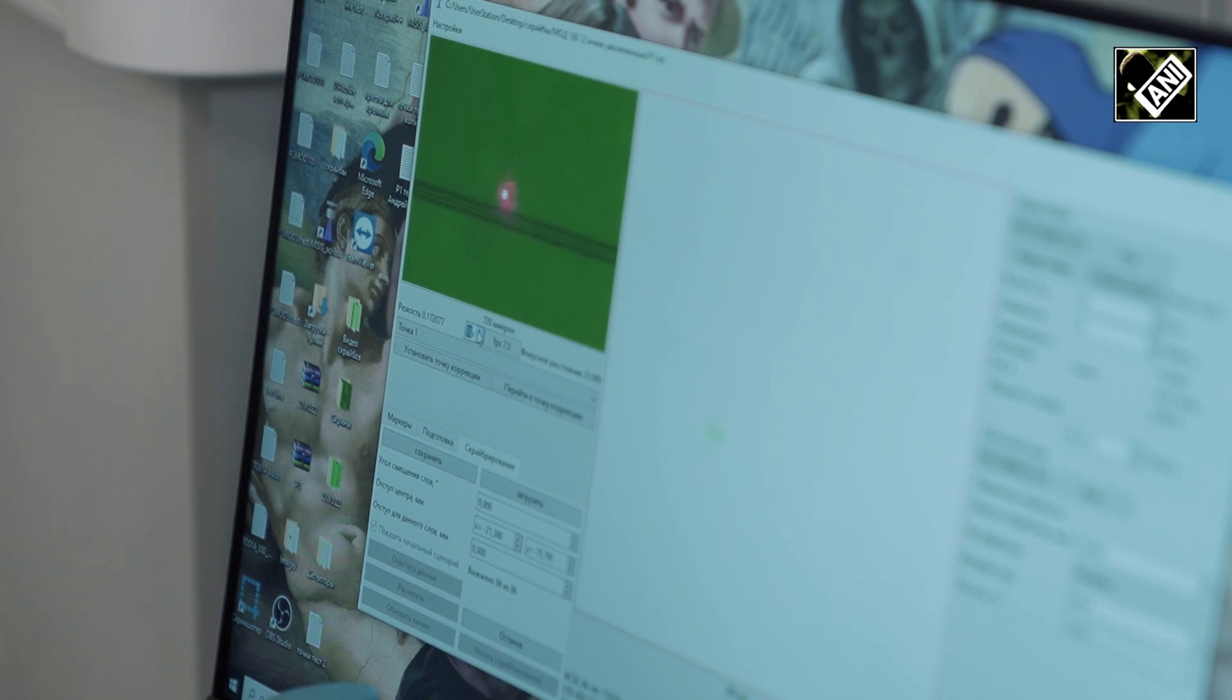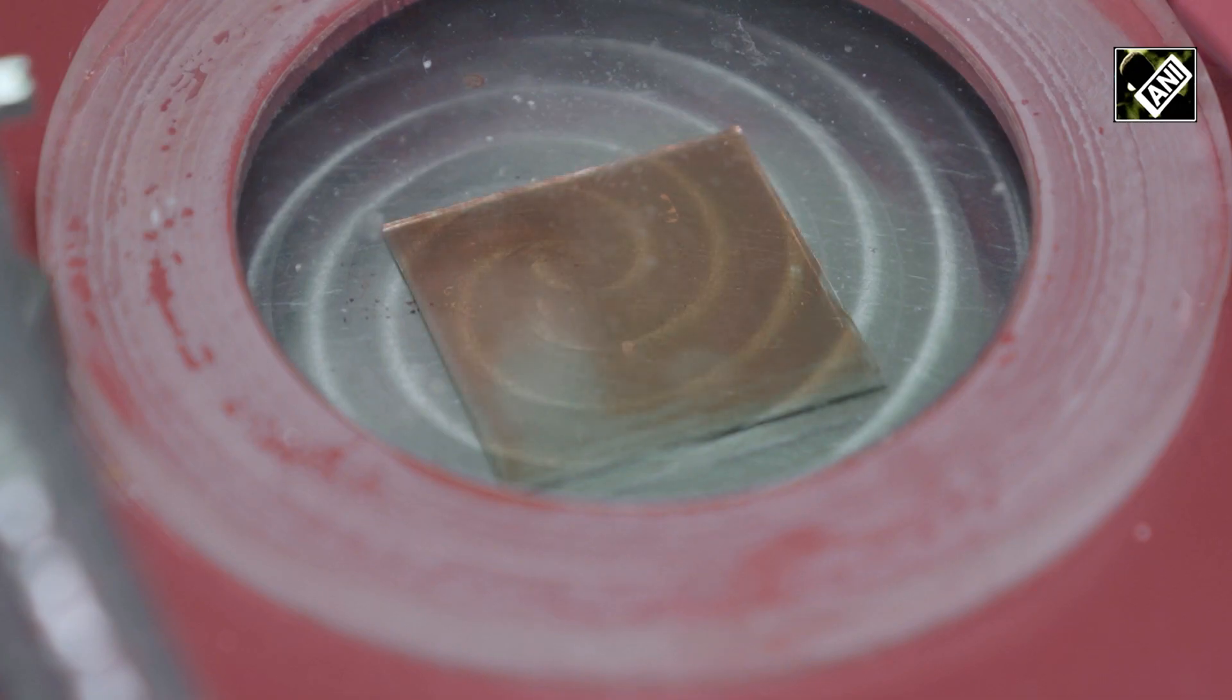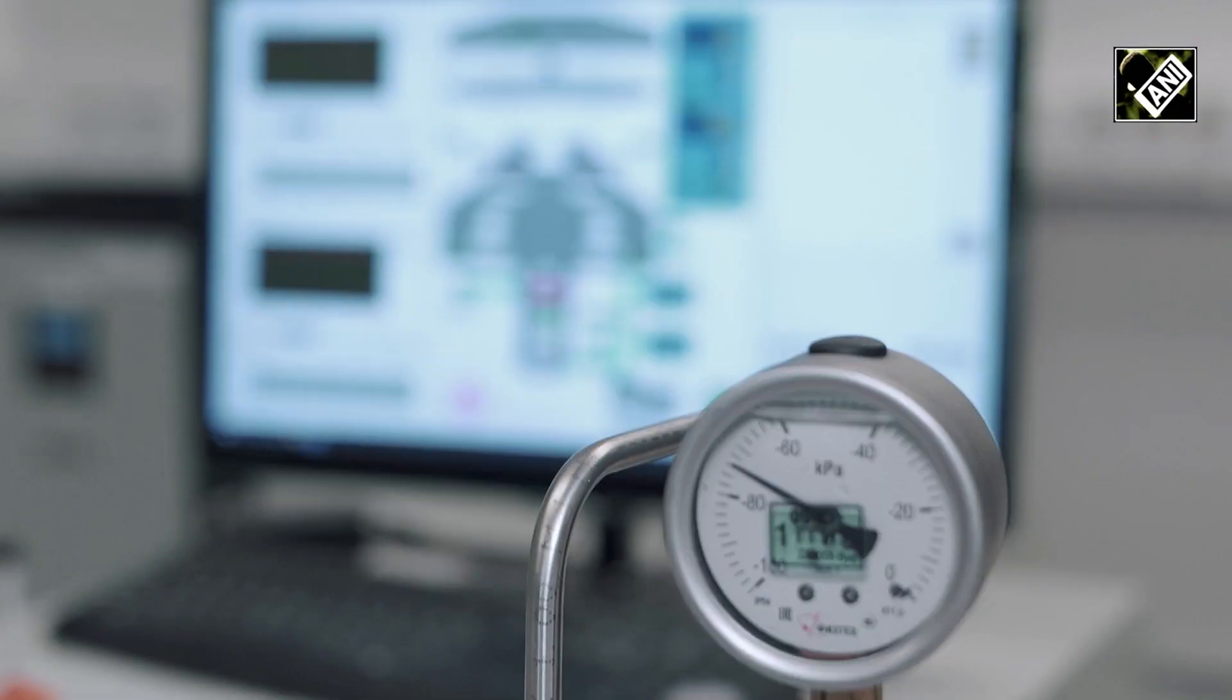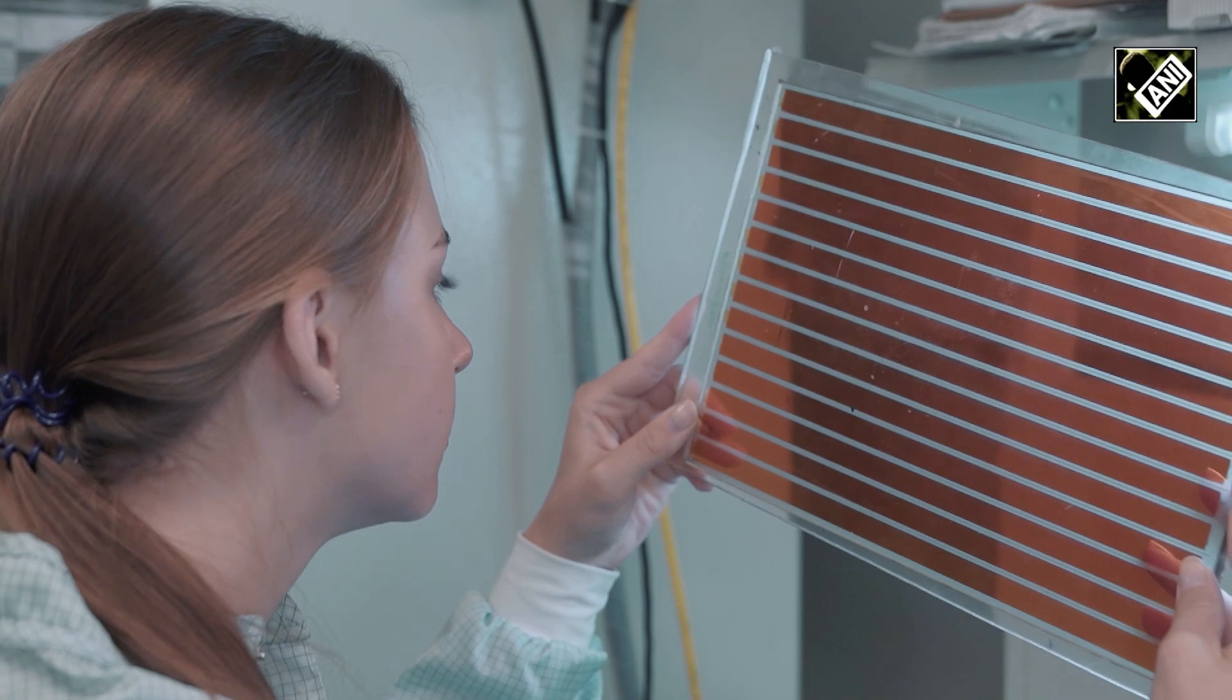They are still inferior to silicon cells in terms of durability and efficiency under direct sunlight. However, the researchers are confident that the issues are solvable and perovskite batteries have huge potential.